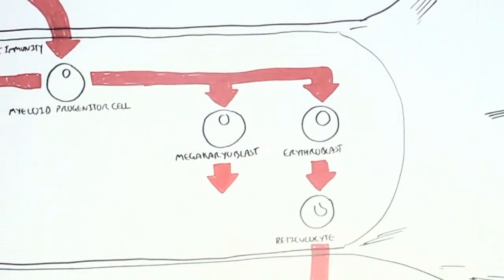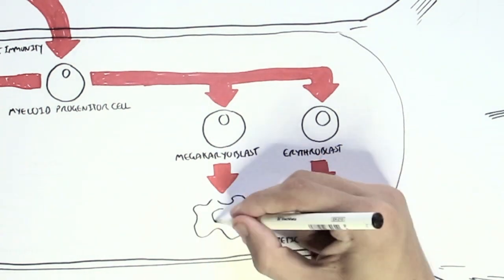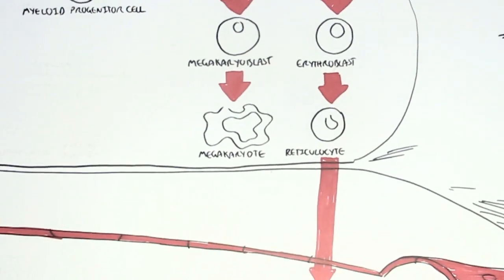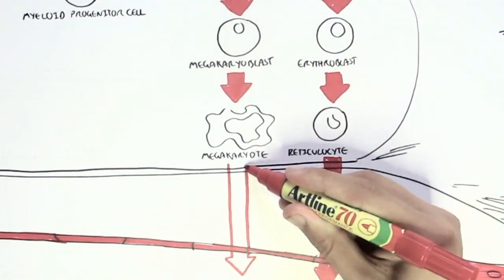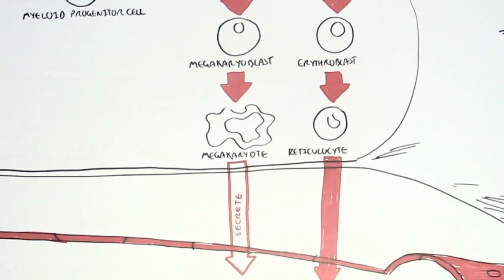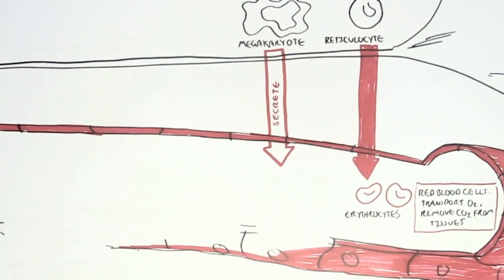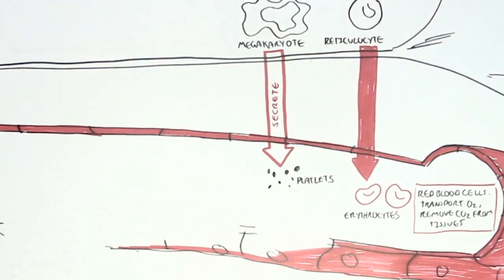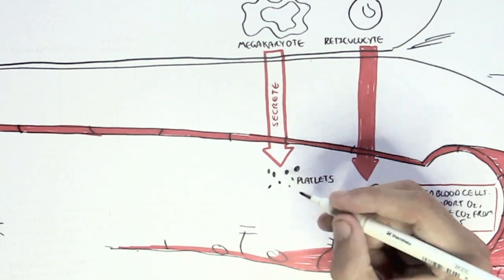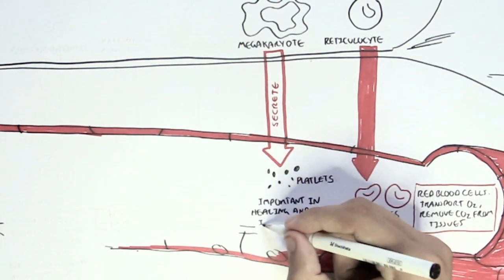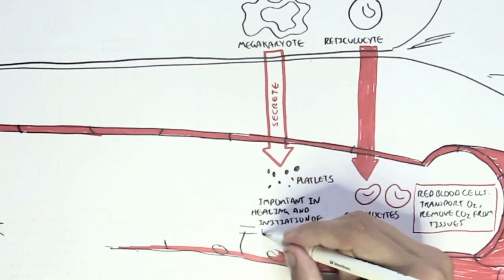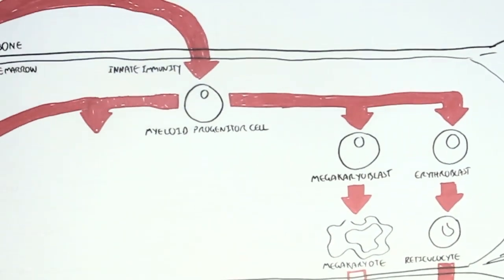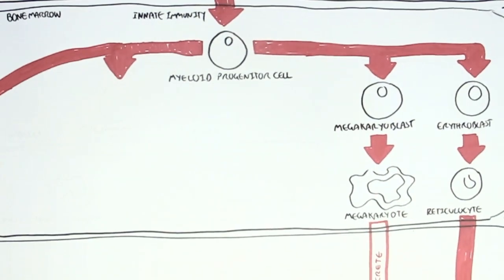The myeloid progenitor cells can also divide to produce what's called a megakaryoblast, which will later give rise to a megakaryocyte. This megakaryocyte stays in the bone marrow but secretes molecules known as platelets. Platelets play a critical role in initiating hemostasis and repair of tissue, and they circulate all around our body.